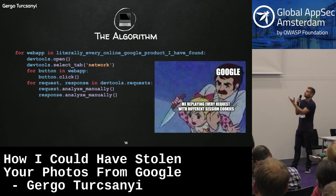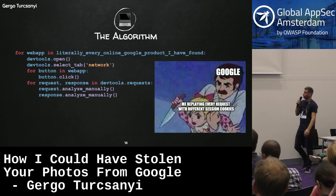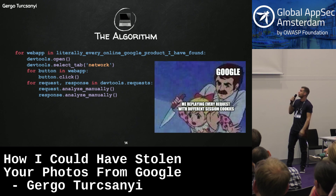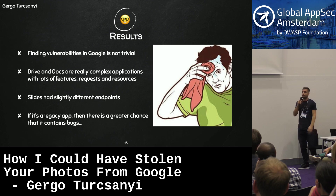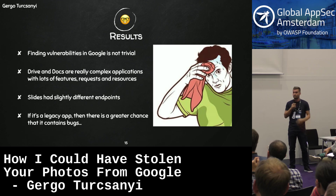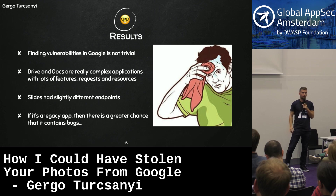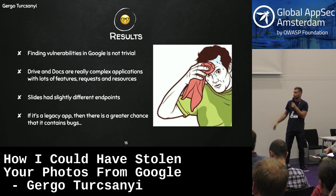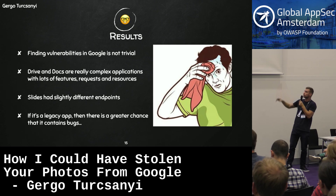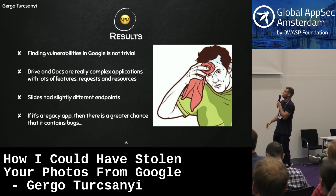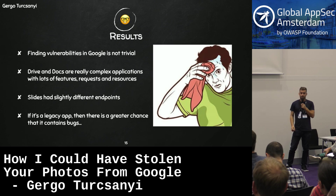I just started looking for anything valuable. I checked all the Google products I found, spending nights, afternoons, lots of time looking for vulnerabilities. But finding bugs in Google is hard - I haven't found anything. My initial results showed that Google Drive and Google Docs are really complex applications with lots of features, buttons, and API requests. Google Slides is part of the Google Docs family but had slightly different API endpoints and features, and I felt it contained some legacy code. So I started to focus on Slides.